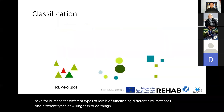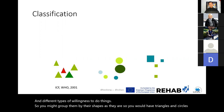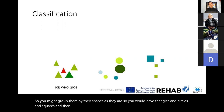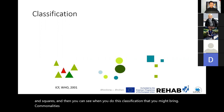You might group them by their shapes — triangles, circles, and squares — and you can see when you do this classification that you bring commonalities together. When we have this in terms of the ICF, this is what we do to generate the evidence.